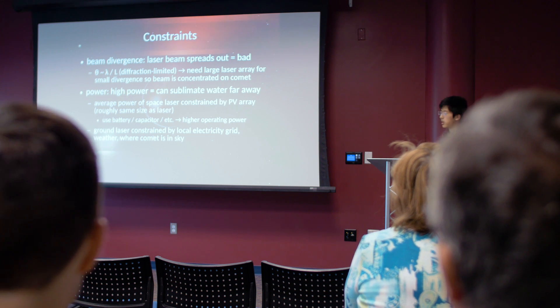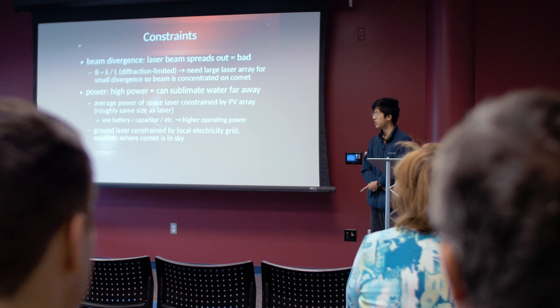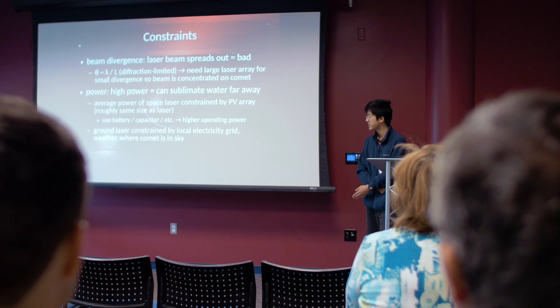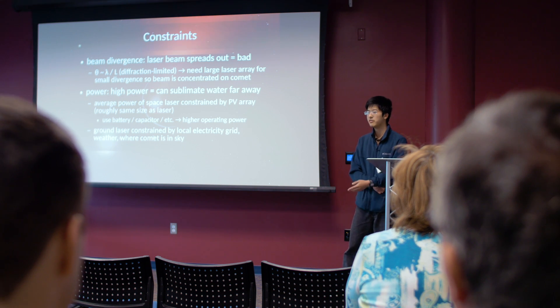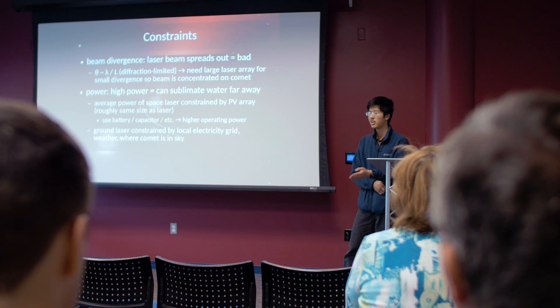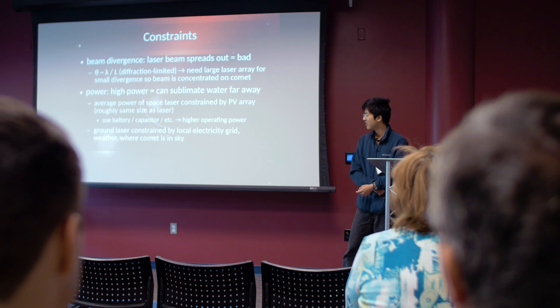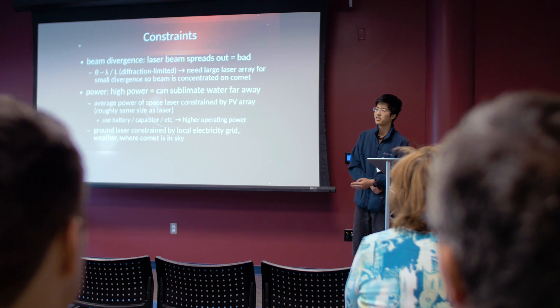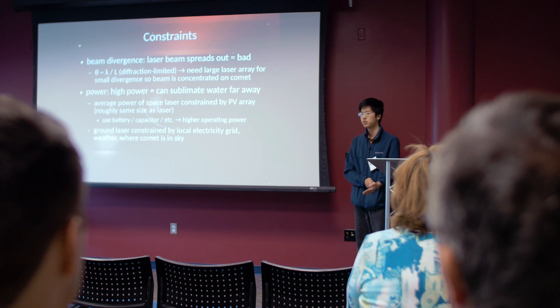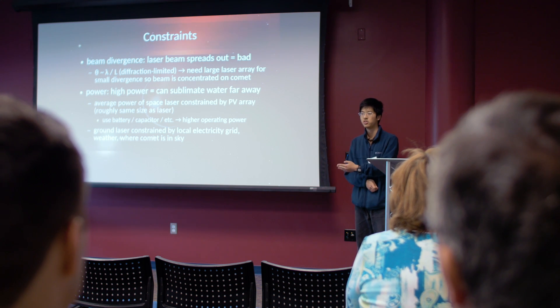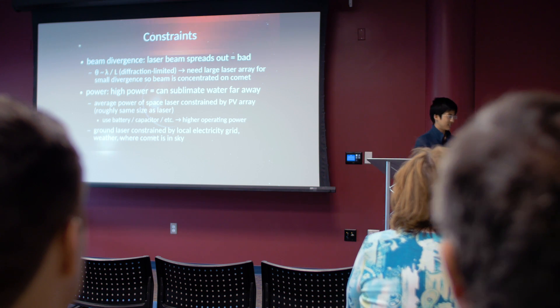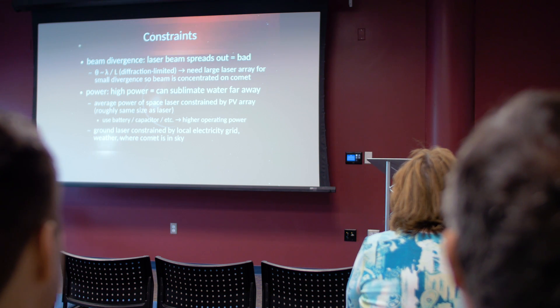So with ground lasers, those are constrained, in addition to beam divergence, also by the local electricity grid, the weather. I mean, if it's cloudy, your laser's probably not getting through all the clouds. And also where the comet is in the sky, because if the comet is actually in the other hemisphere, for example, you have a laser in Antarctica, but the comet's approaching from the direction of the North Pole, you can't shoot your laser underground. So you're limited by those constraints.